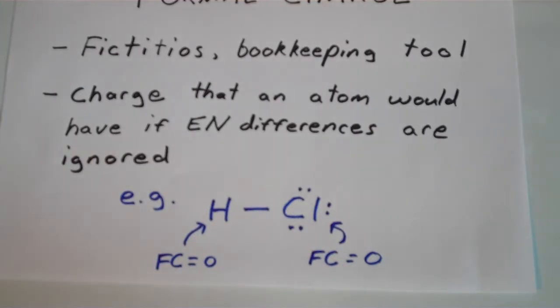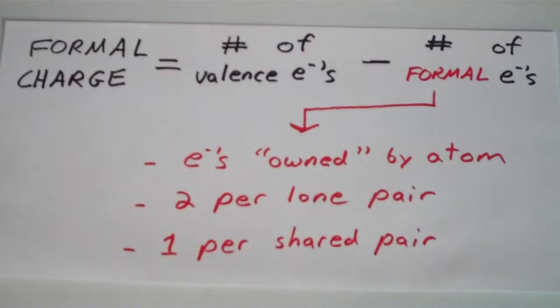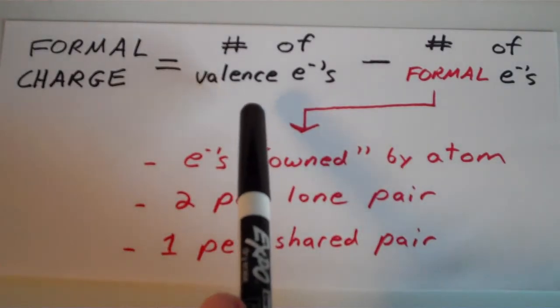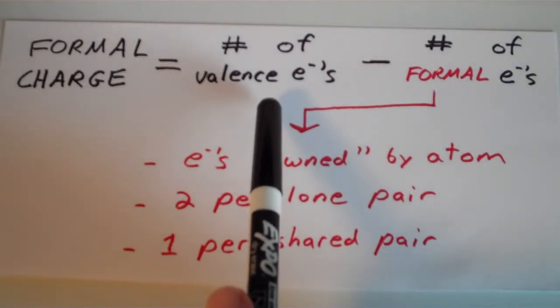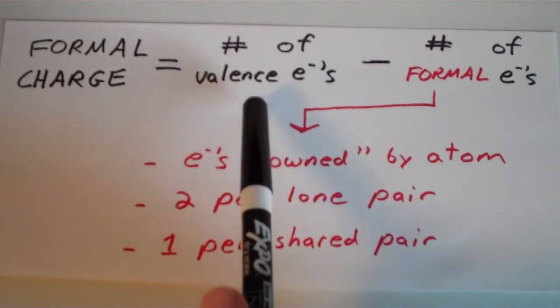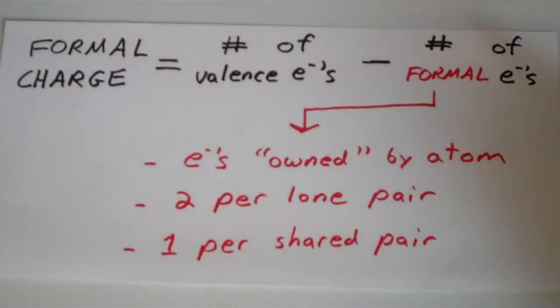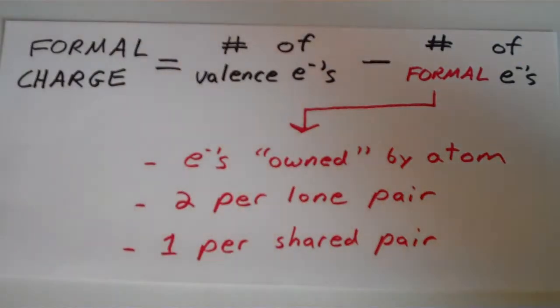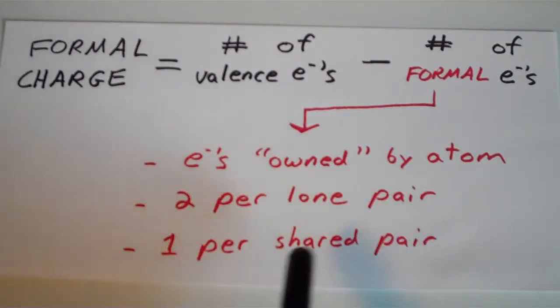To calculate the formal charge of any atom, you take the number of valence electrons that atom has — which for a main group element is just the group number — minus the number of formal electrons that atom has. Formal electrons are electrons owned by an individual atom: two per lone pair and one per shared pair around that atom.